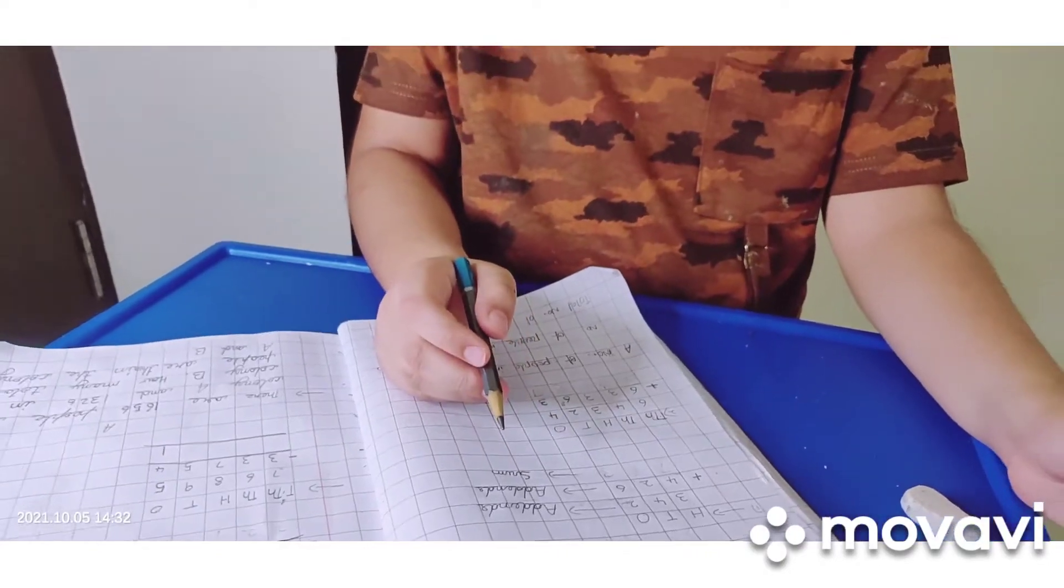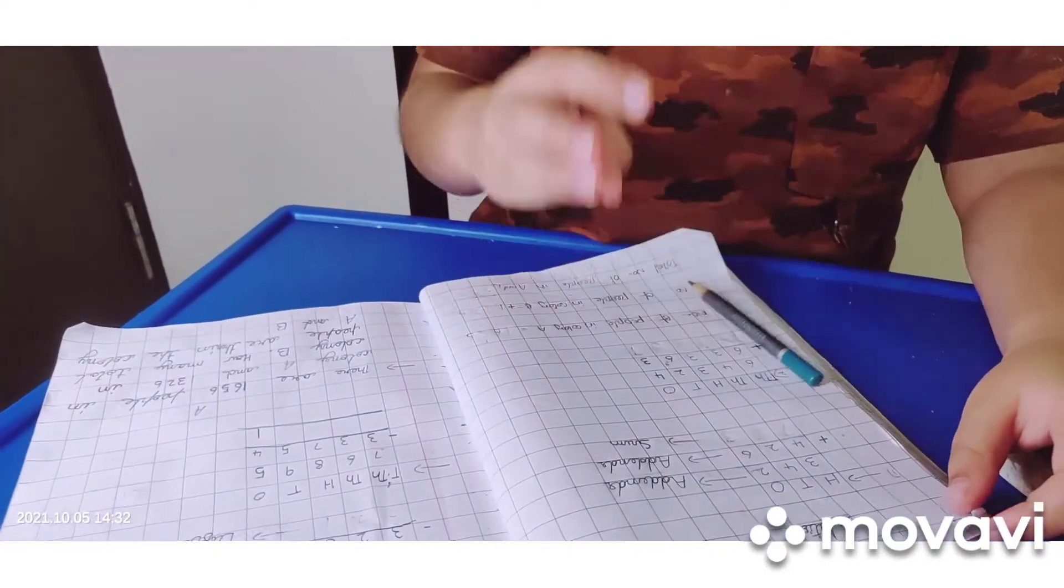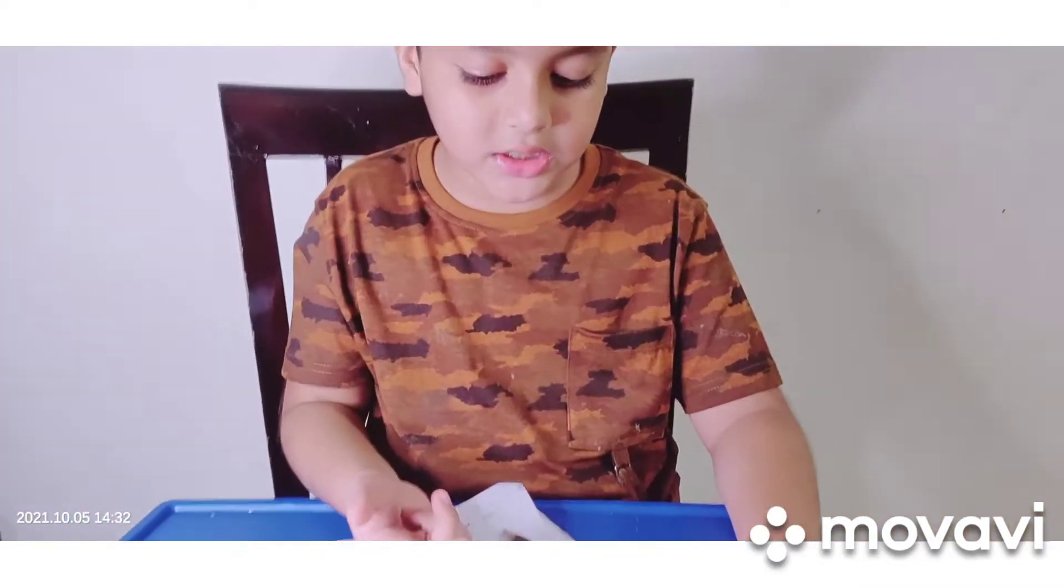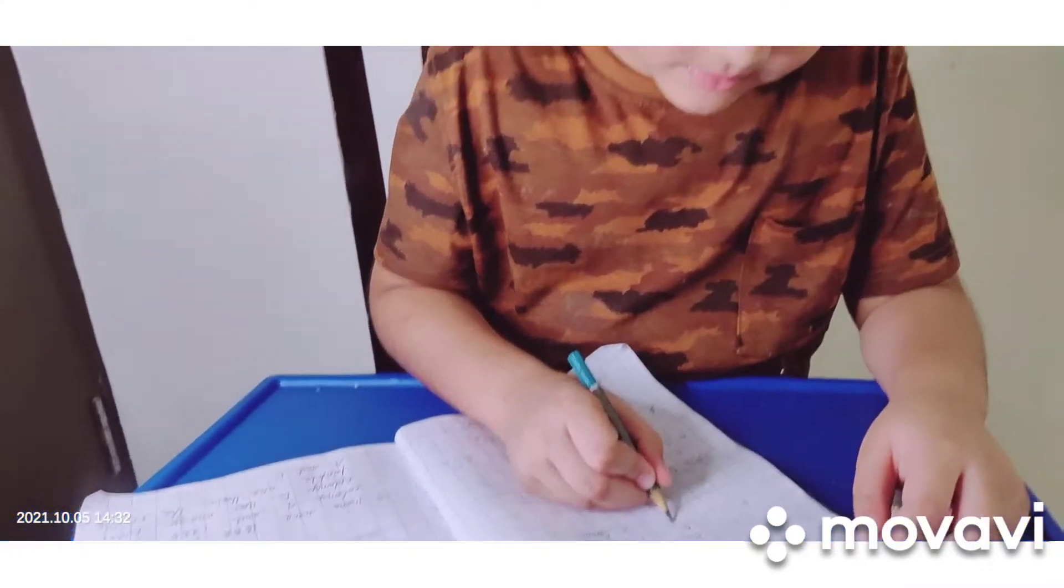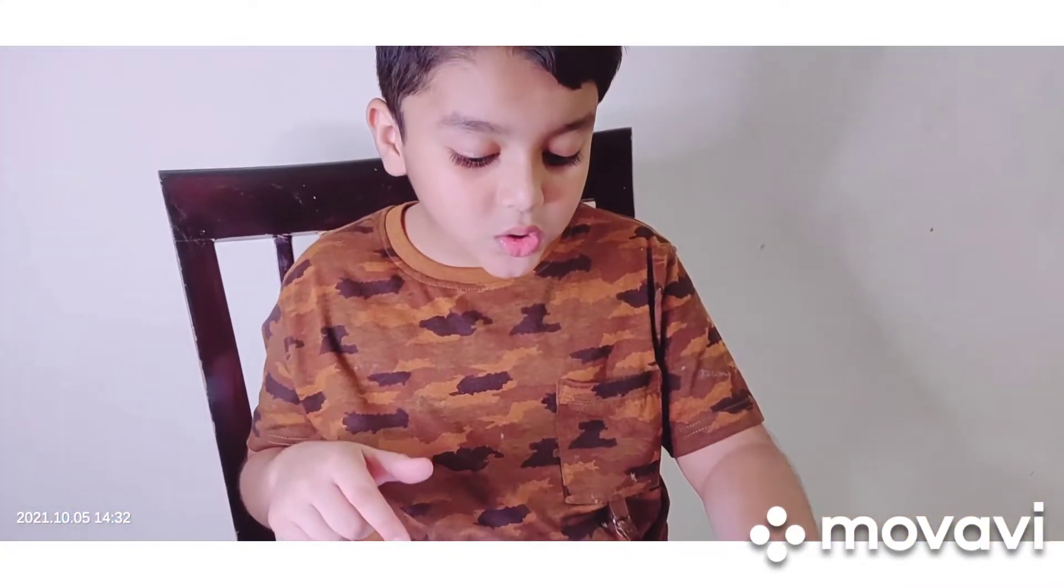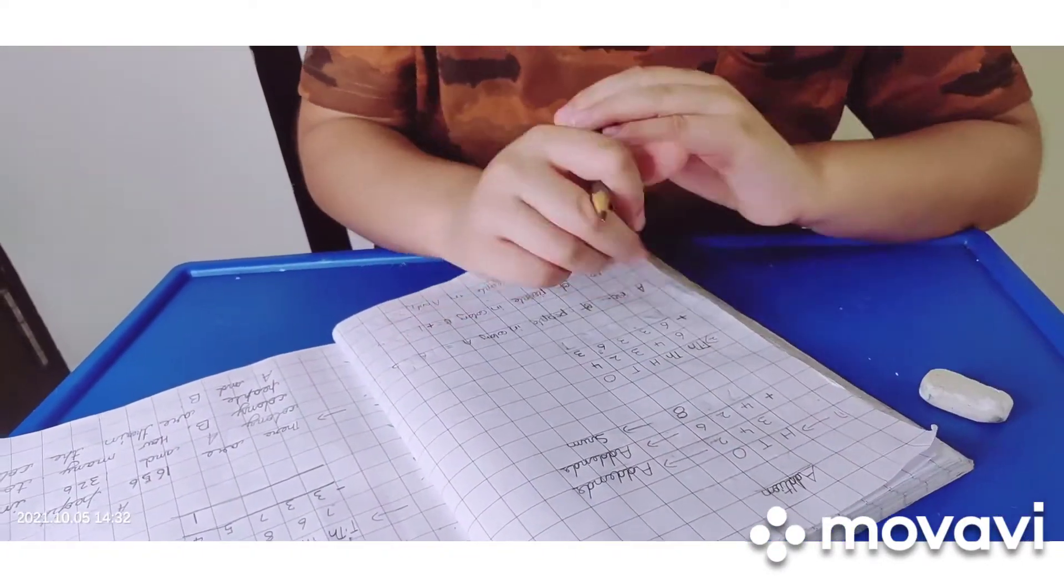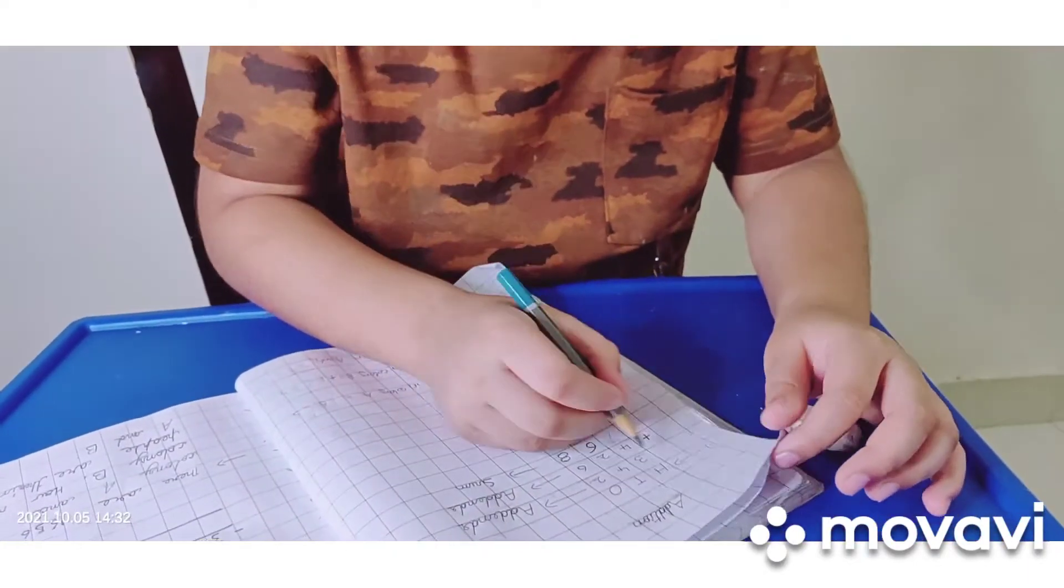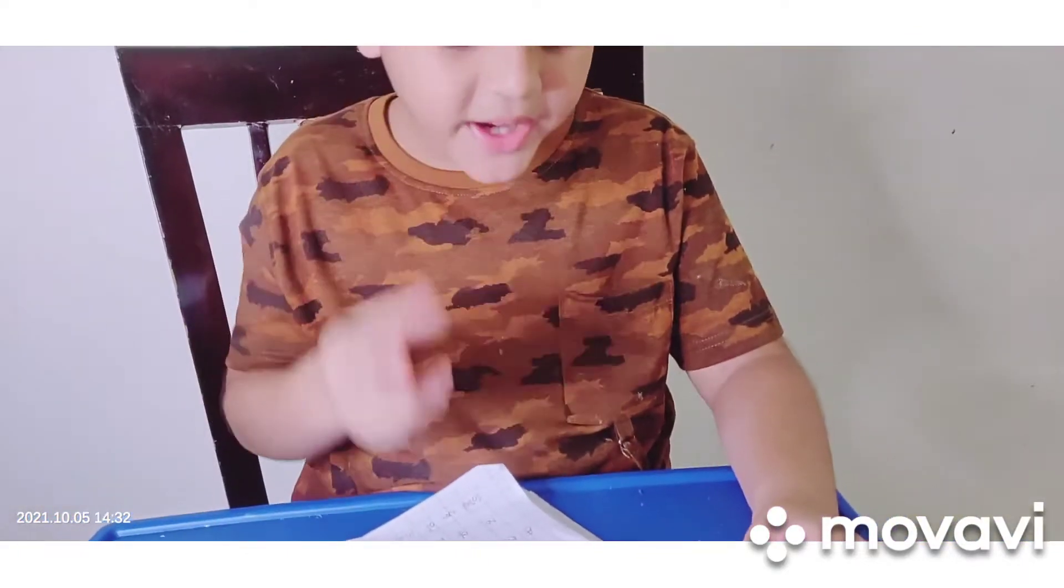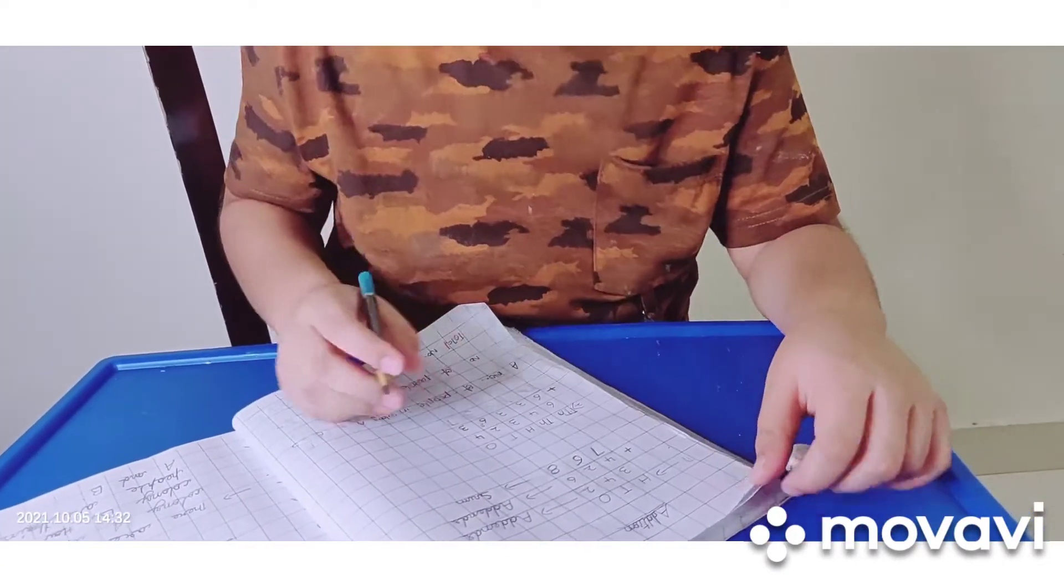Let us solve this problem. 2 plus 6: put 6 in the mind, 2 in the fingers, 7, 8. 4 plus 2: 4 in the mind, 2 in the fingers, 5, 6. 3 plus 4: 4 in the mind, 3 in the fingers, 5, 6, 7. Please calculate in the mind, I am just explaining to you. My father always tells you to calculate in the mind.